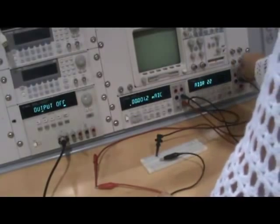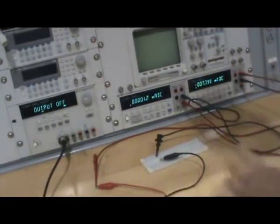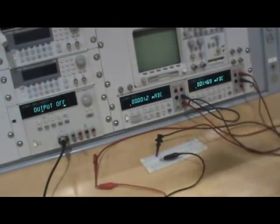Set the other DMM to measure DC volts and put that in parallel across the resistor.